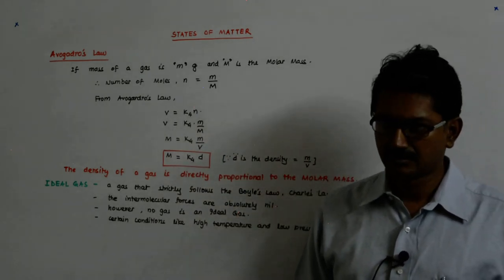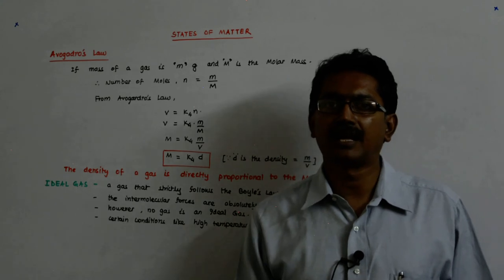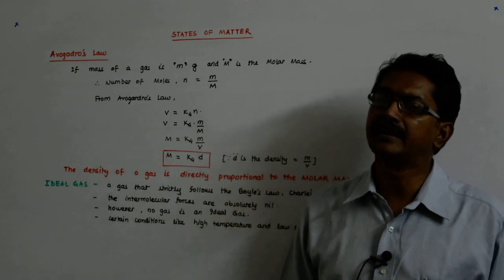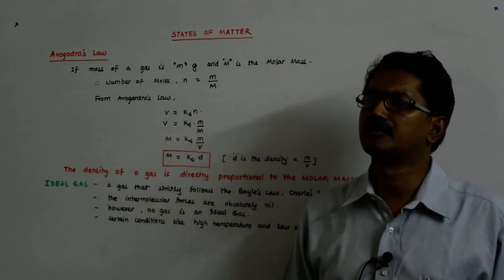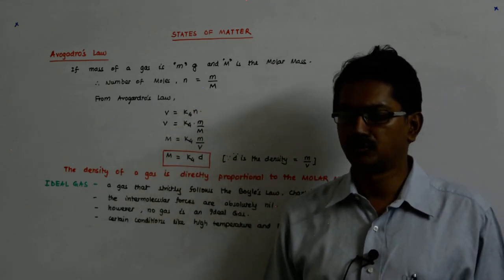Temperature in Kelvin. It is actually each molecule will have an energy of 3 by 2 KBT, where KB is a constant called Boltzmann's constant. We will soon come to it, don't worry.